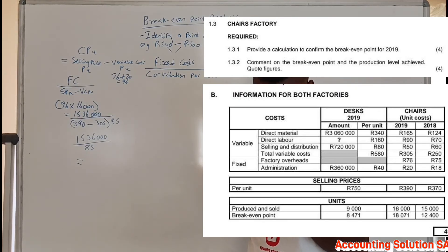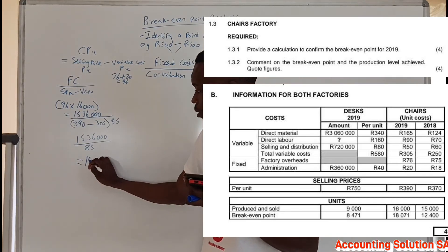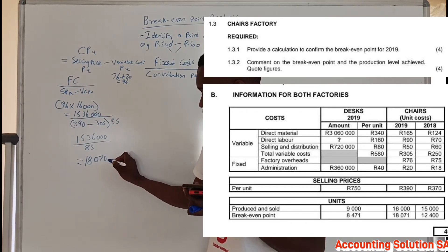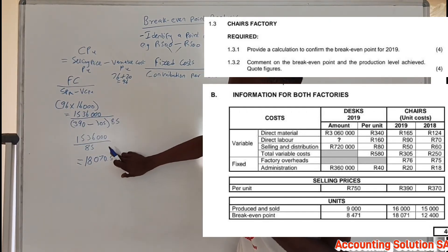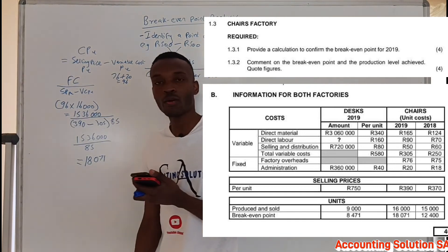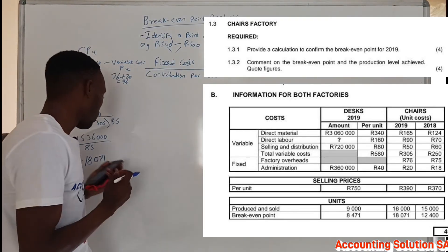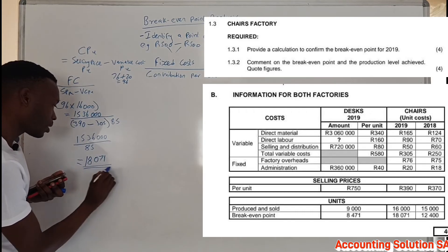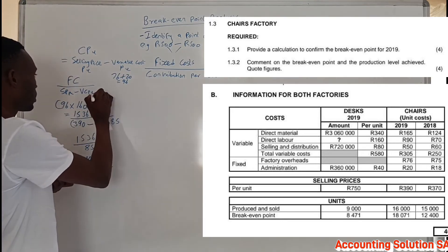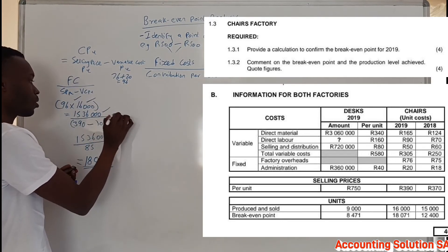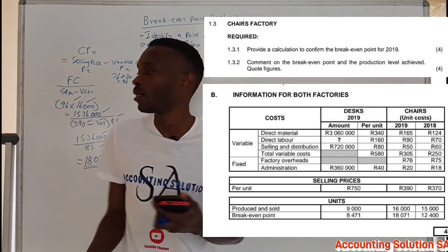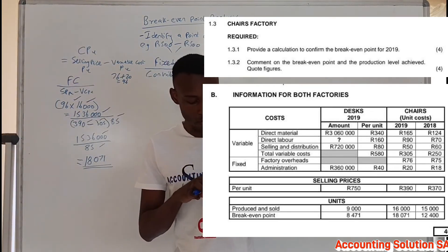So the calculation is 1,536,000 divided by 85, which gives us 18,070.5 — rounded, that is 18,071 units. Checking against the table, we have confirmed that the break-even point is correct, as the answer was already given and we were asked to confirm it through calculation. Marks are awarded for the workings, not just the final answer.